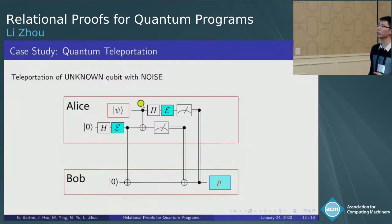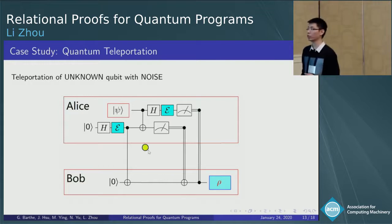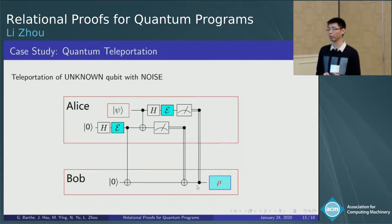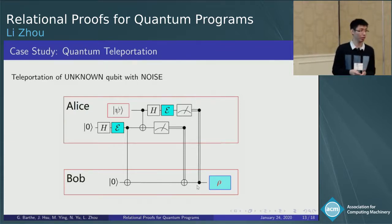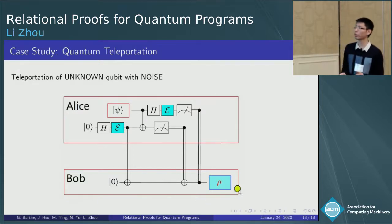So what is the robustness test? We add a quantum noise, E, after each H gate, and use rho to denote the final state that Bob can recover. So we aim to prove that rho is close to the initial state, Psi.